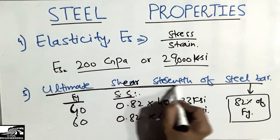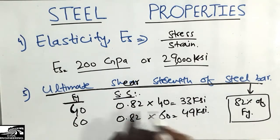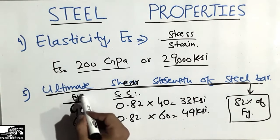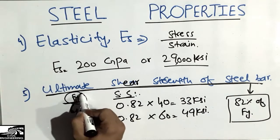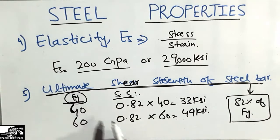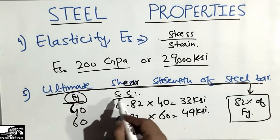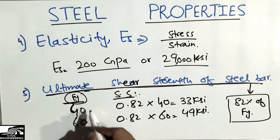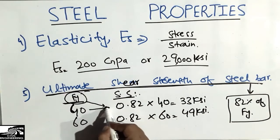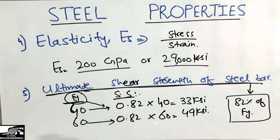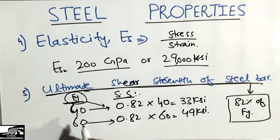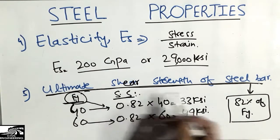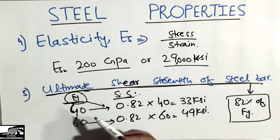The ultimate shear strength is always less than the yield strength of the steel bar. We can find the ultimate shear strength for each grade by taking 82% of its yield strength.